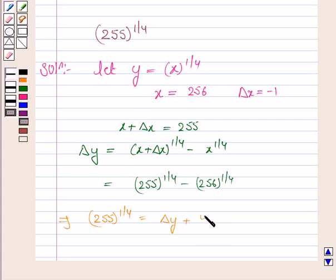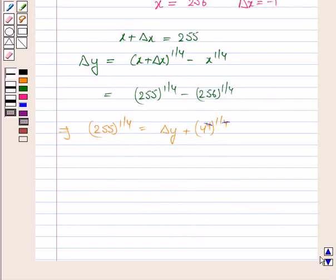Now 256 can be written as 4 to the power 4. So here 4 gets cancelled with 4 and we have delta y plus 4.